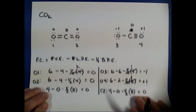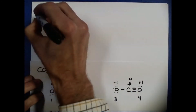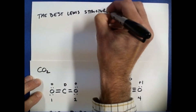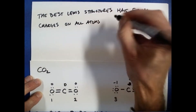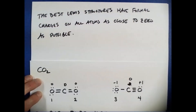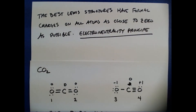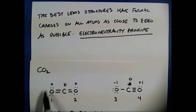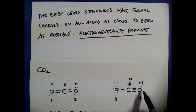There are a couple of things to keep in mind when thinking about formal charge and evaluating between two Lewis structures. The first is that the best Lewis structures have formal charges on all atoms as close to zero as possible. This is known as the electroneutrality principle. In this particular Lewis structure, all of the atoms have a formal charge of zero, which makes it better than the one where we have an atom with a formal charge of negative one and another with positive one.